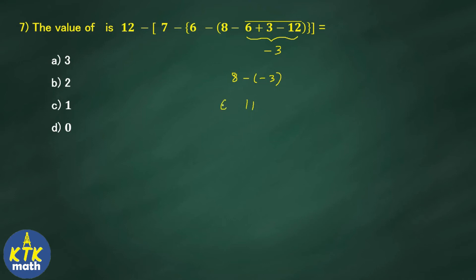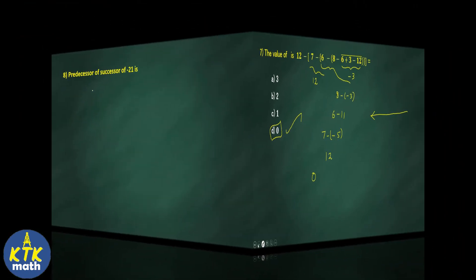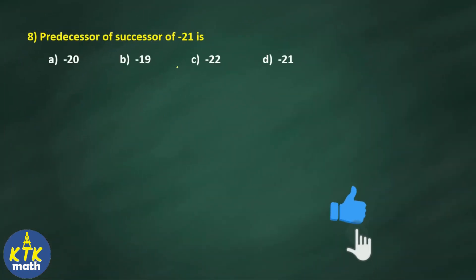Substituting: 6 minus 11 equals minus 5. Now 7 minus of minus 5 equals 7 plus 5, which is 12. Finally, 12 minus 12 equals 0, which is the answer. We solved the expression from right to left one step at a time and arrived at the answer zero.